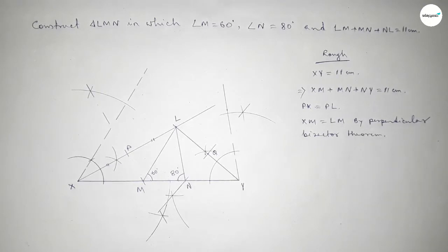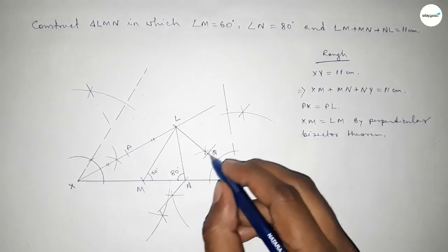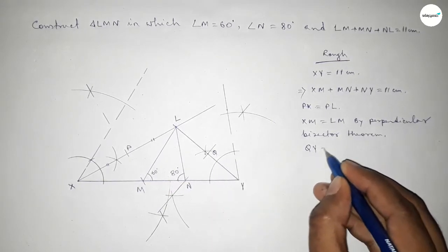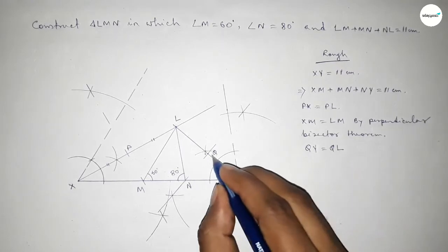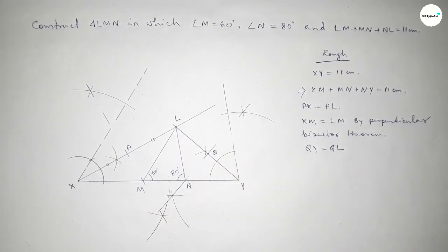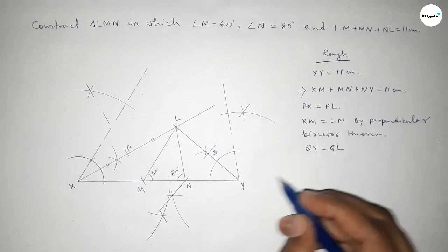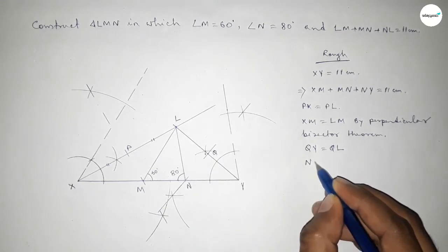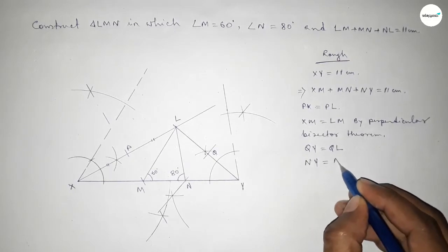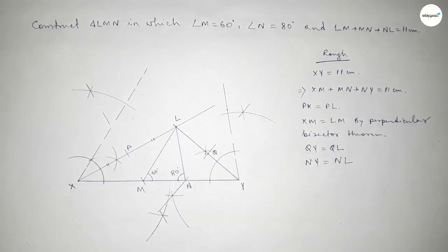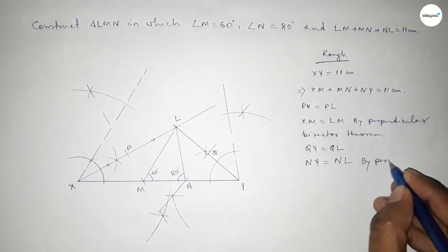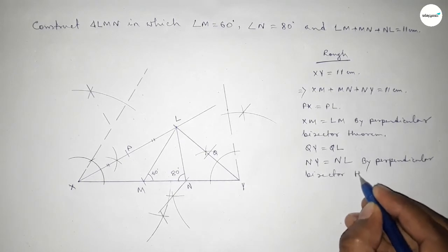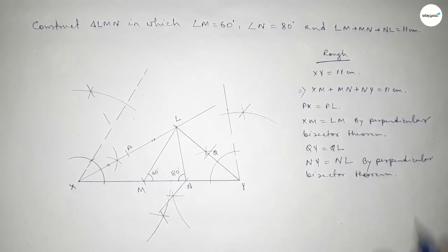Similarly, the perpendicular bisector on line LY bisects it equally into two parts, taking point Q. By the perpendicular bisector theorem, NY equals NL. If you don't know the perpendicular bisector theorem, please read about it.